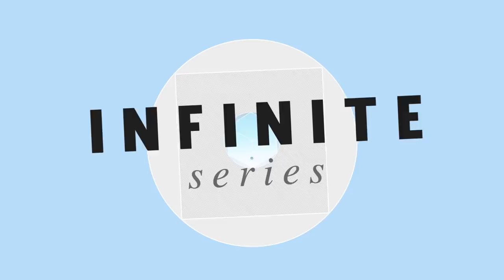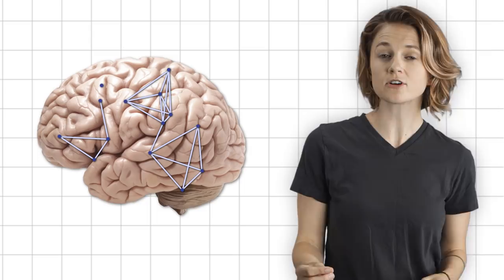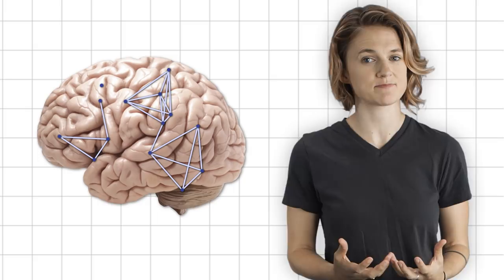Let's recap the last two episodes. The brain can be mathematically modeled as a graph, where the vertices are neurons and the edges indicate which neurons are communicating during a given time slice. We can then interpret this graph as a simplicial complex by converting the complete subgraphs into simplices.